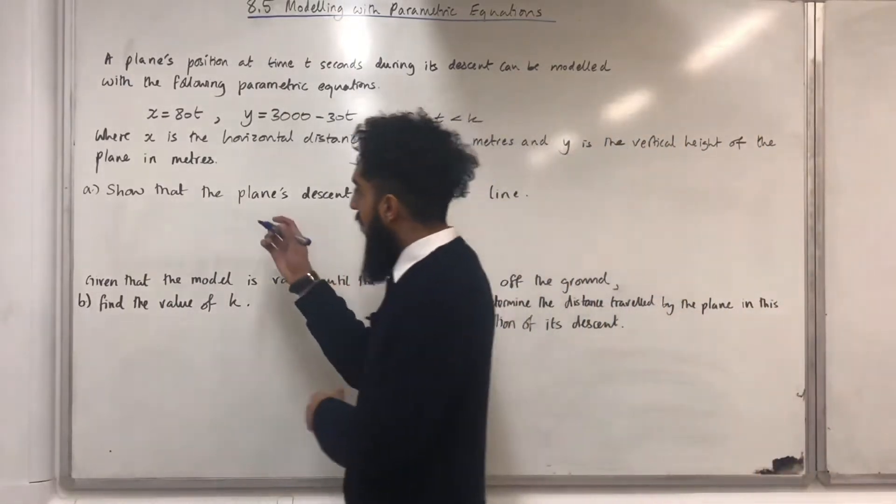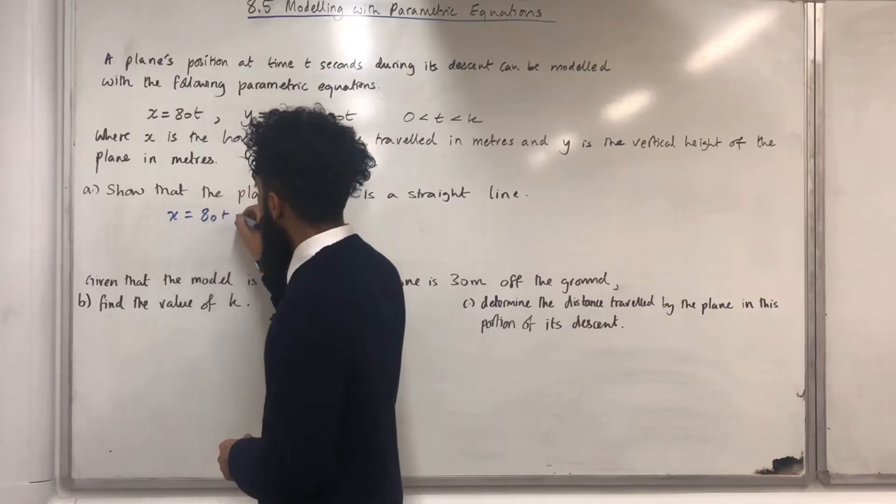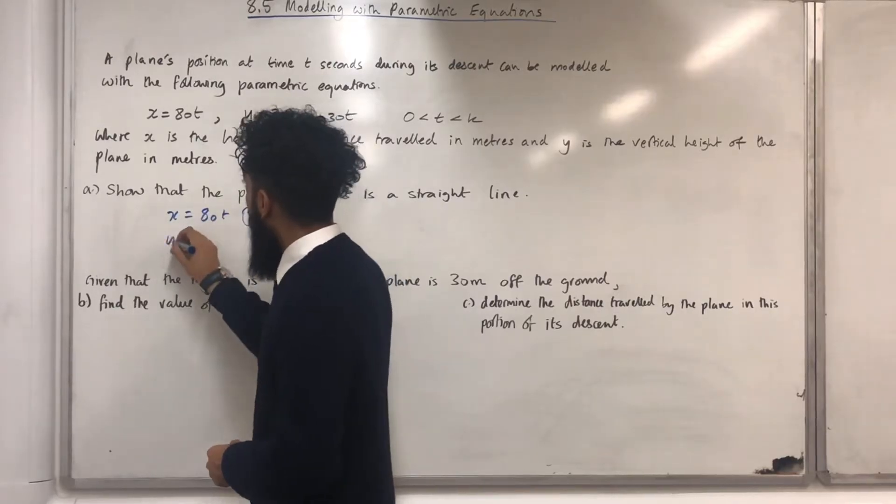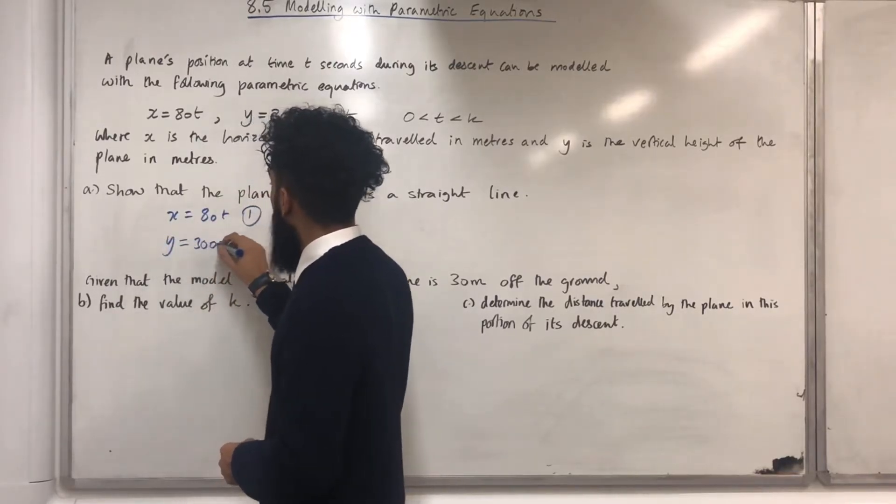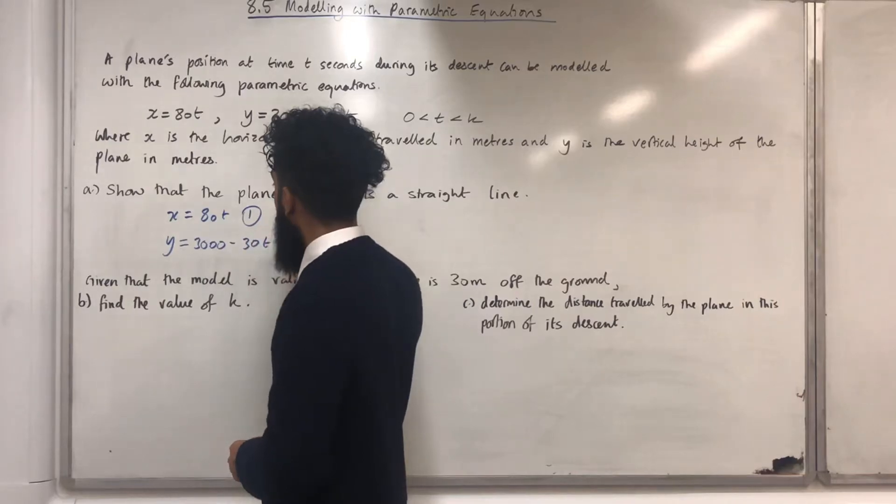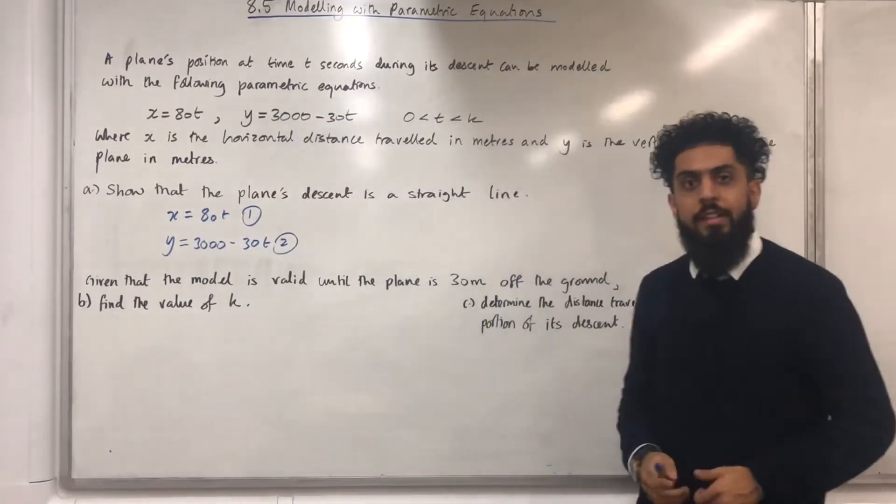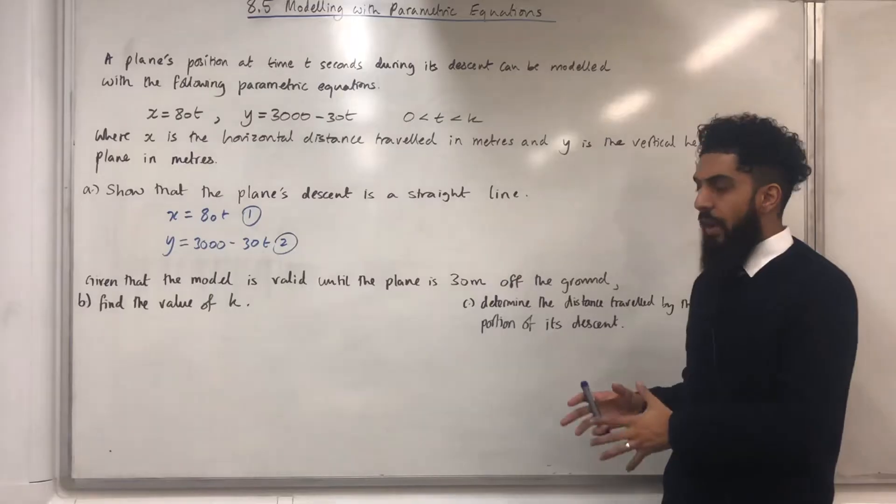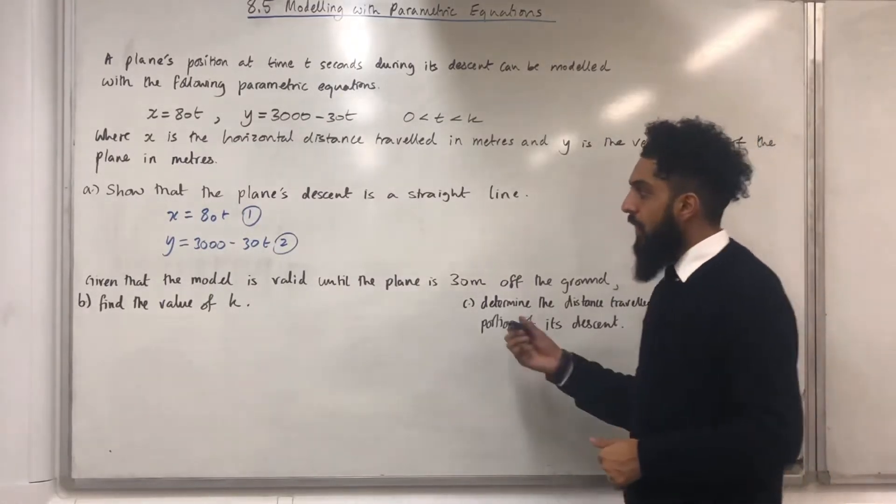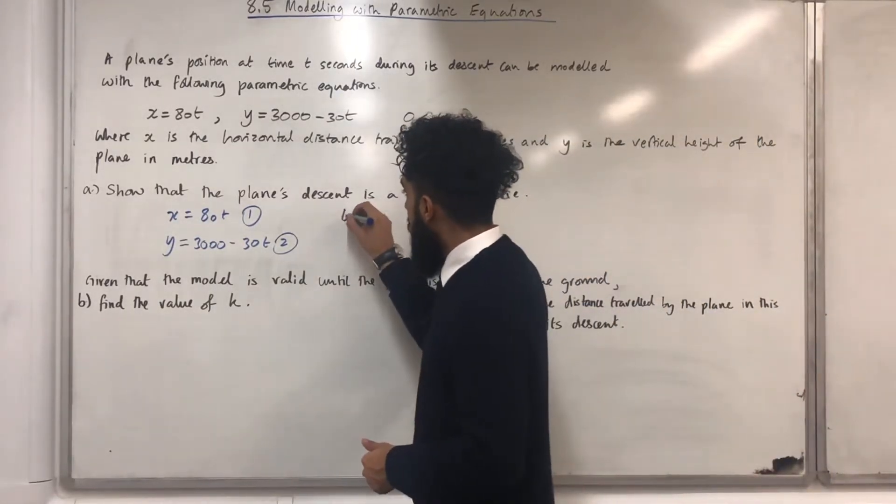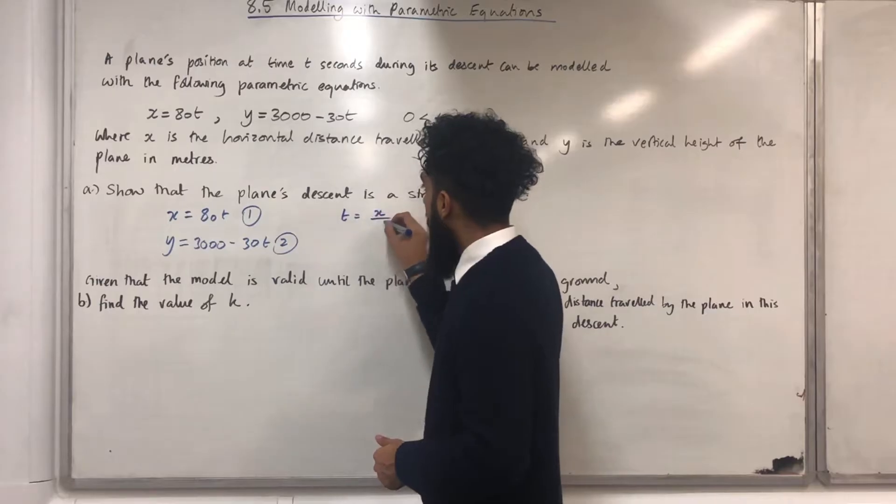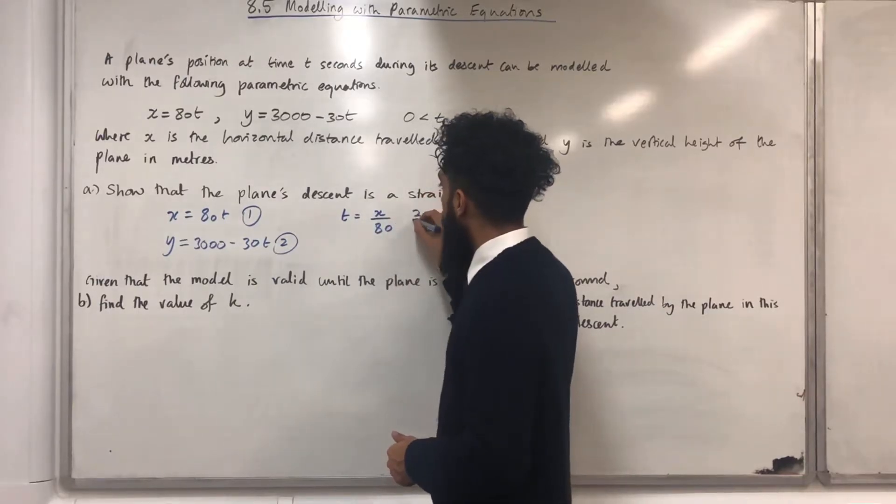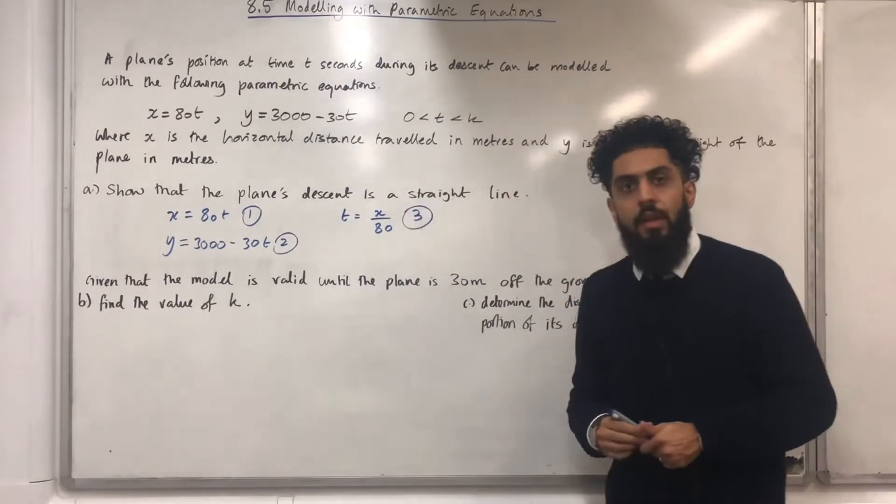The first step is to write down the parametric equations. I've got x equals 80t, equation 1, y equals 3000 minus 30t, equation 2. The second step is to take equation 1 and make t the subject. So if I do that, I obtain t equals x over 80. I can call this equation number 3.